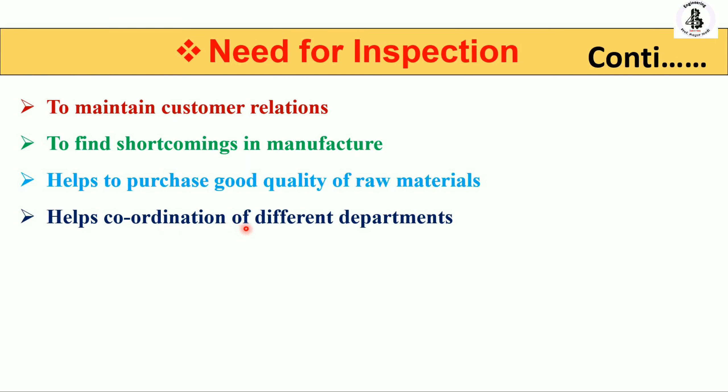Inspection also helps coordinate different departments. The eleventh point is to take decisions on defective parts. As per design considerations, tolerance limits are used with respect to dimensional accuracy and interchangeability in manufacturing. During measurement, if a component is within the limits it will be accepted, but if the measurement is out of limits it is considered a defective part. By inspection you determine whether a component is accepted or rejected, so you can easily take decisions on defective parts.